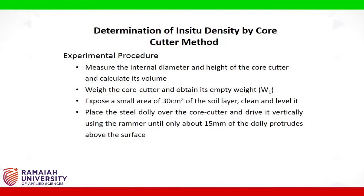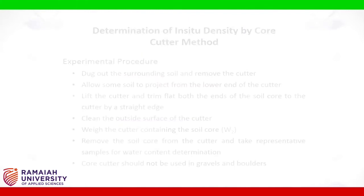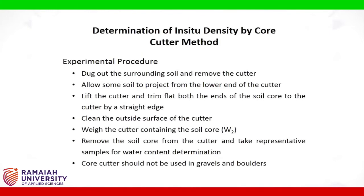Place the steel dolly over the core cutter and drive it vertically using the rammer until about 15 mm of the dolly protrudes above the surface. Dig out the surrounding soil and remove the cutter. Allow some soil to project from the lower end of the cutter.